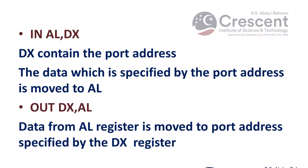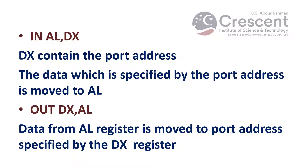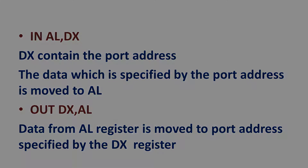In variable port addressing, the port address is not specified in the instruction. For example, IN AL, DX — here DX represents the port address, and the value available at the address in DX register is moved to AL. Another example is OUT DX, AL — data from AL register is moved to the port address specified by the DX register. For example, if DX contains 70H, the value in AL is moved to port address 70H.